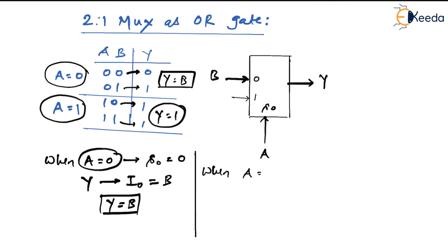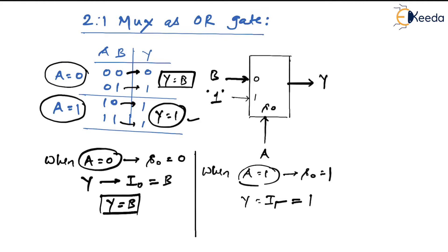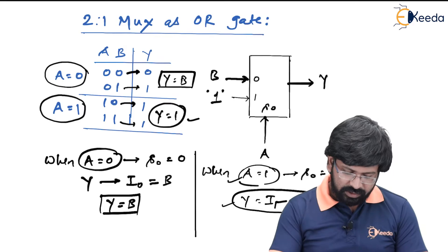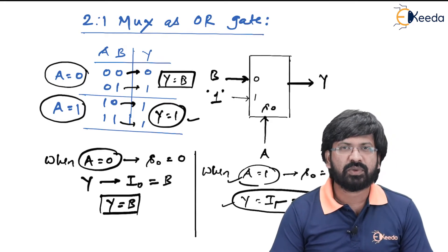When the value of A is equal to 1, it causes S0 to become 1, which causes Y to get connected to I1. When A equal to 1, output should be equal to 1, so I1 will be connected to logic 1. So when A equal to 1, Y is equal to 1. This is how 2-to-1 multiplexer can be used as an OR gate.